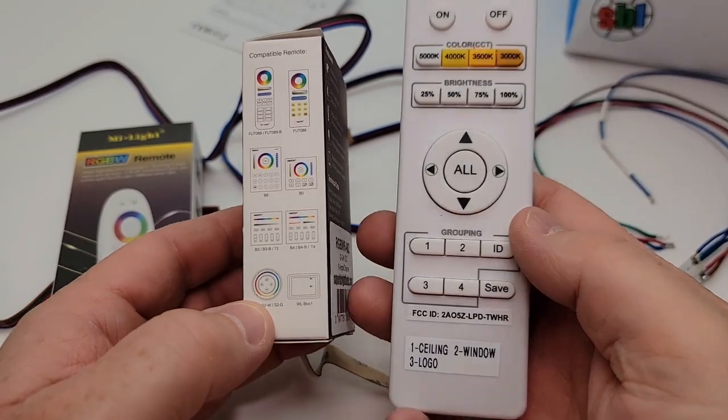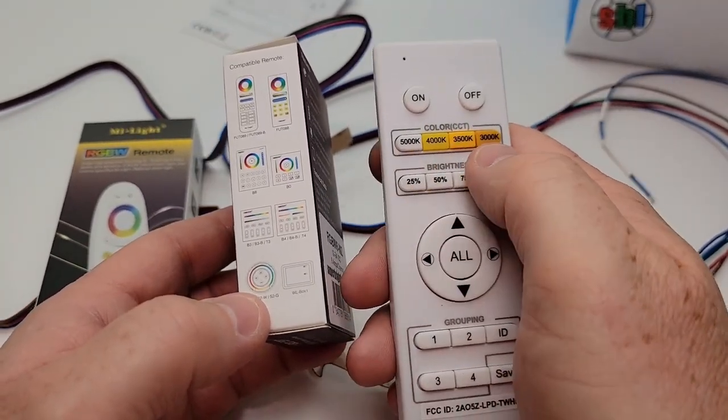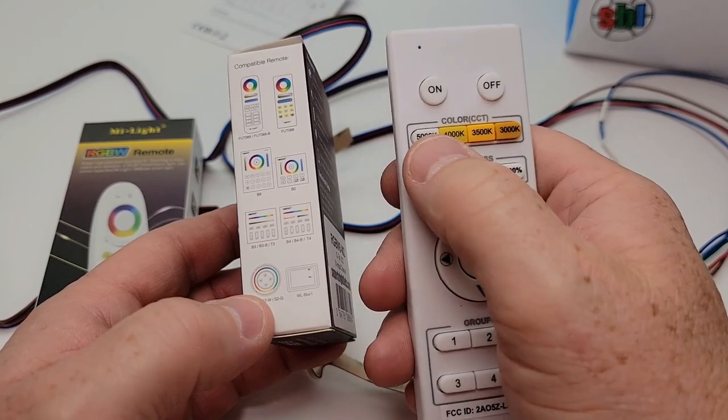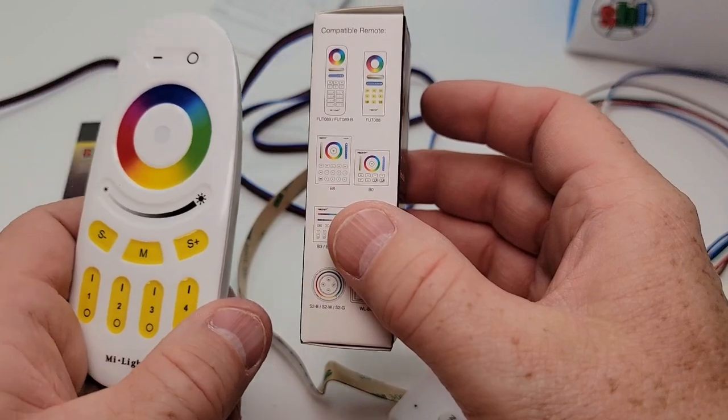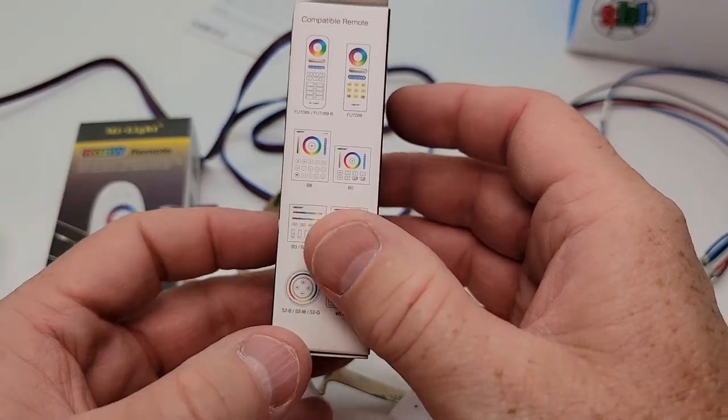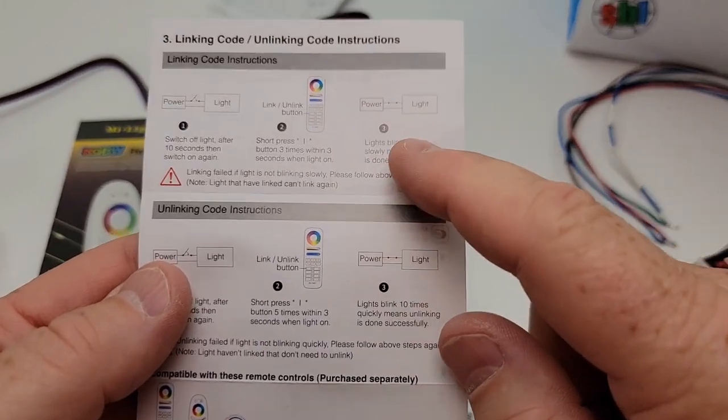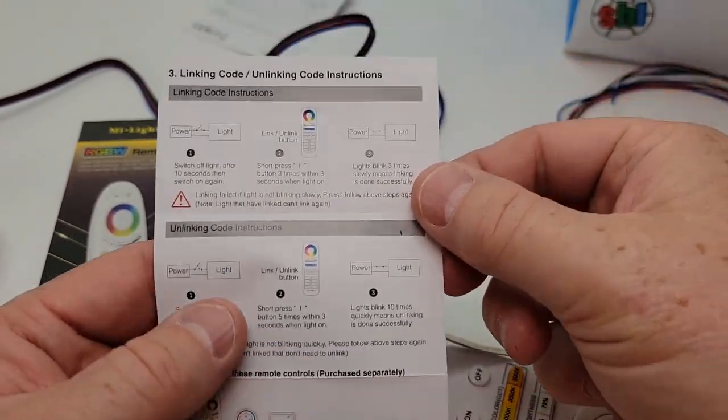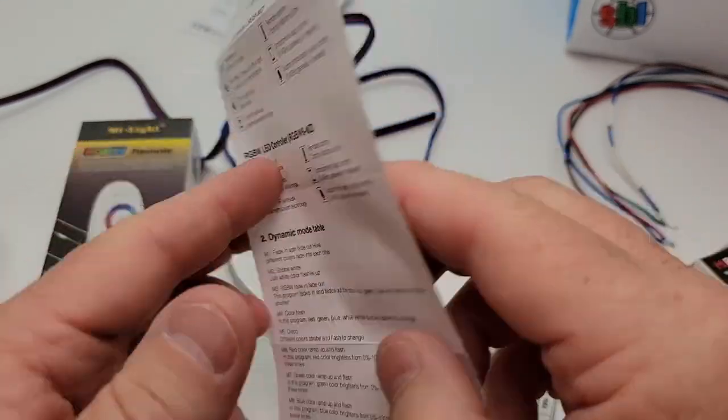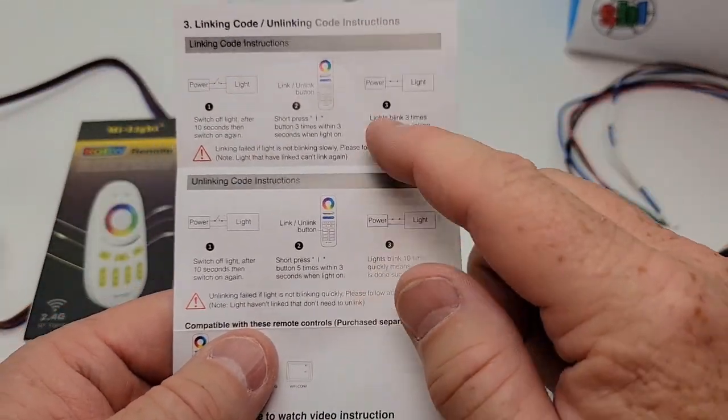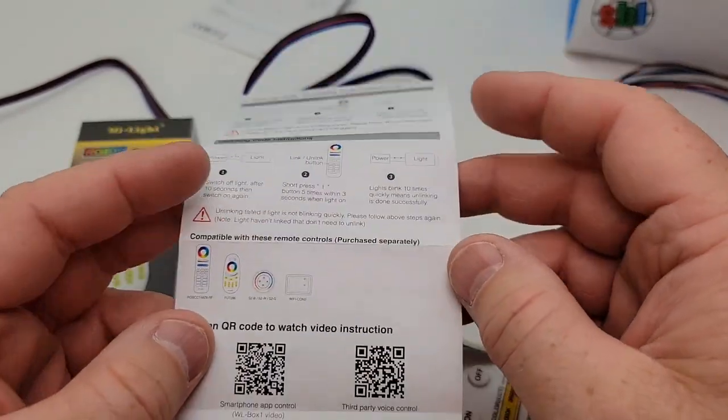It's not compatible with this remote because this is just for the bi-color, like the white from 3000K to 5000K. This is red, green, blue controller. But it looks like they do have some different controllers. Now, be sure and keep the little instruction manual that comes with it because this is going to show you how to link it up. It is very simple. It worked really well. And you may have to unlink it. And it shows you how you can group it into buttons and different things. You can do groupings on that one.